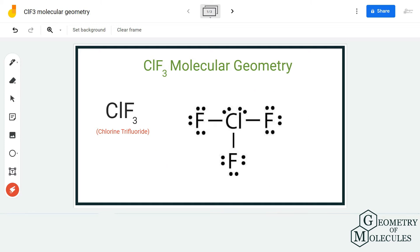This is the Lewis structure of ClF3 in which chlorine atom is forming bonds with three fluorine atoms, and it also has two lone pairs of electrons because it can have expanded octets.